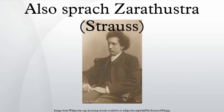The orchestra consists of the following: piccolo, three flutes, three oboes, English horn, clarinet in E-flat, two clarinets in B-flat, bass clarinet in B-flat, three bassoons, contrabassoon, six horns in F and E, and four trumpets in C and E.